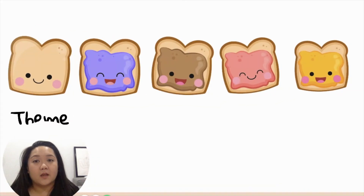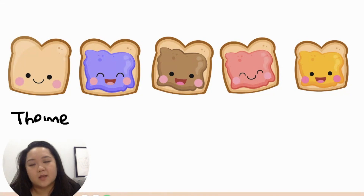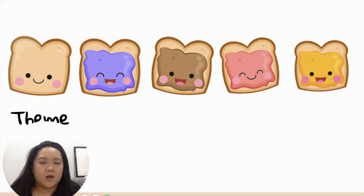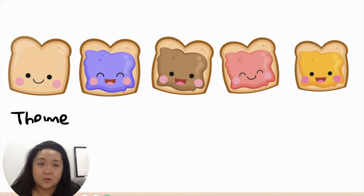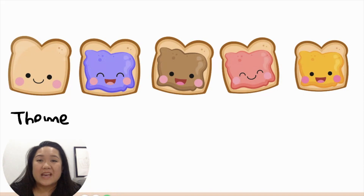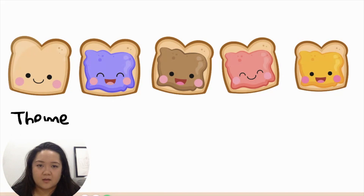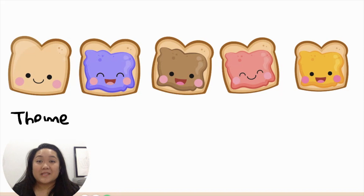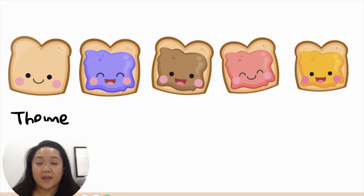A theme is the main melody when we're talking about theme and variations. Even when we think of theme as it refers to books or stories, it's the main part. So it's the main melody that we hear over and over again. A variation is a change on that melody. Essentially, theme and variations is hearing the same tune over and over again, but the variations are little changes.